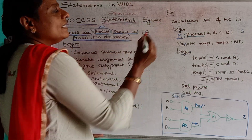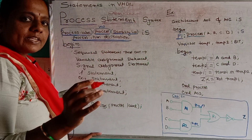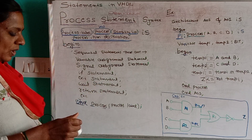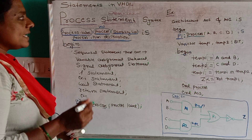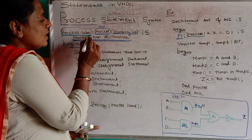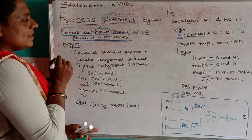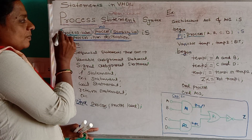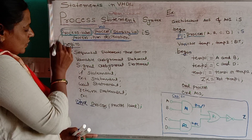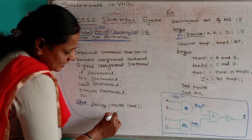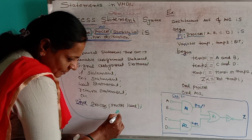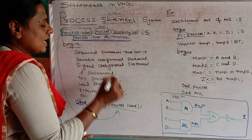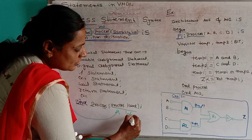Let us study the syntax of the process statement. The process statement syntax begins with the keyword process label. If it begins with the keyword process label, then it should end with the process label.